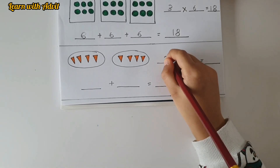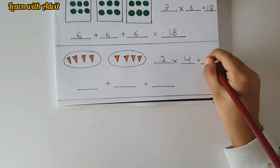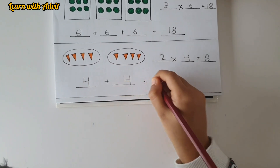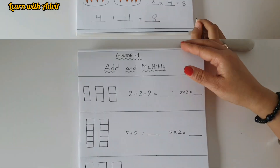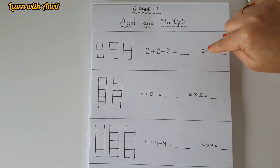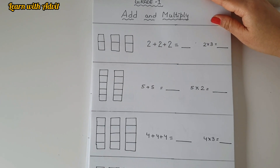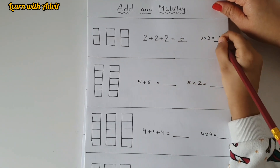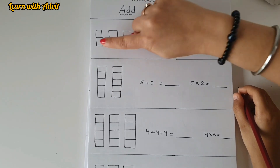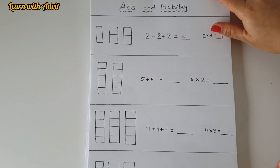So three times six equals eighteen, and six plus six plus six also equals eighteen. Now the last one: there are two groups of four triangles. Two times four equals eight. Write the addition: four plus four equals eight. Good job! This is the third way — add and multiply. Here are some blocks. Count the objects: one, two — one, two — one, two — one, two. So two plus two plus two equals six, and two times three equals six.